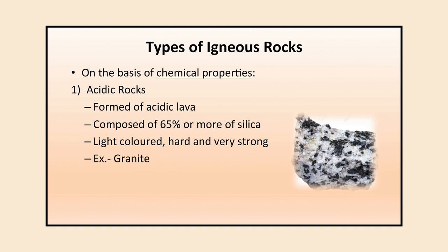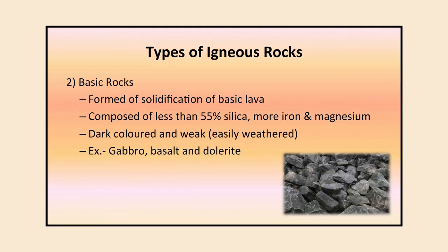On the basis of chemical properties, there are two types of igneous rocks: acidic rocks and basic rocks. Acidic rocks are formed of acidic lava, composed of 65 percent or more silica, and are light in color, hard, and very strong — example is granite. Basic rocks are formed from basic lava, composed of less than 55 percent silica with more iron and magnesium, are dark in color and weak, and are easily weathered — examples are gabbro, basalt, and dolerite.